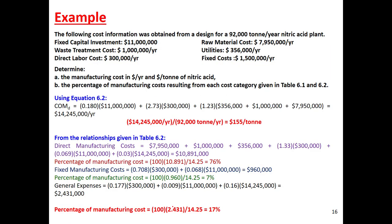We have a worked example with the following cost information obtained from a manufacturing plant. We have the following information for a design of 92,000 tons per year of nitric acid. Fixed capital investment (FCI) is given.